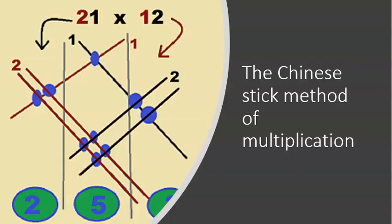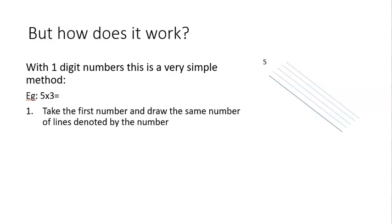Hey guys, what you're seeing in this video is called the Chinese stick method for multiplication. Although it seems wildly complicated, it's actually really simple. So how does it work?